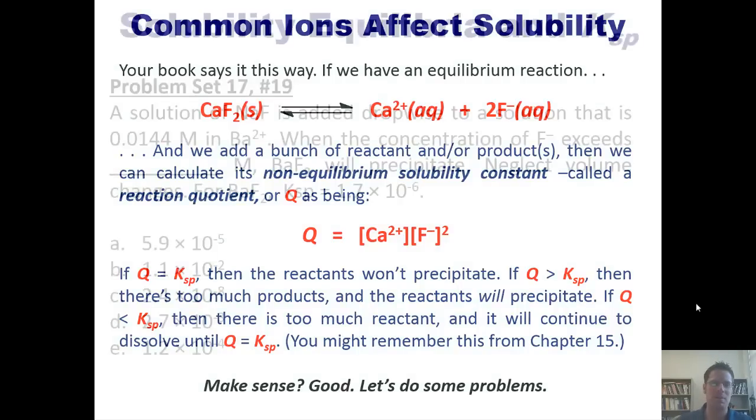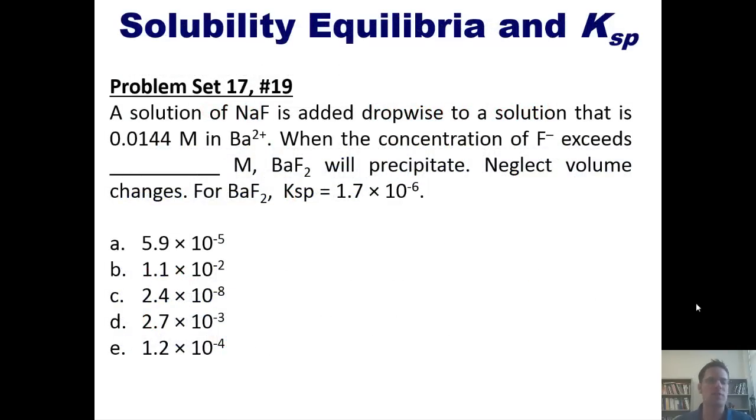All right, let's go and do some problems. First, a solution of sodium fluoride is added dropwise to a solution that is 0.0144 molar in barium cation. When the concentration of fluoride exceeds blank molar, barium fluoride will precipitate. Please neglect volume changes. For barium fluoride, just so you know, KSP is equal to this number. As per usual, you're welcome to attempt this on your own, and then if you like, you can click this link to a separate video in which I show you how to do it on the board.